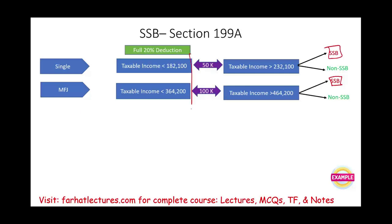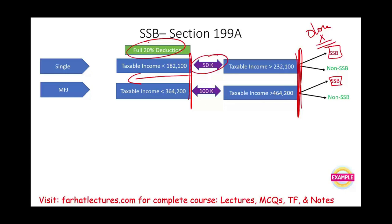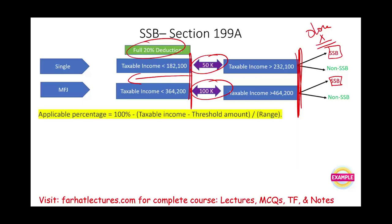Let's dive into how we compute the limitation for SSBs. If you are below the lower threshold, there's nothing to do — you get the 20% deduction. Once you reach the upper threshold, there's zero deduction. For those falling within the range, we compute the applicable percentage: 100% minus the result of (taxable income minus the lower threshold) divided by the range — $50,000 for single filers, $100,000 for married filing jointly.